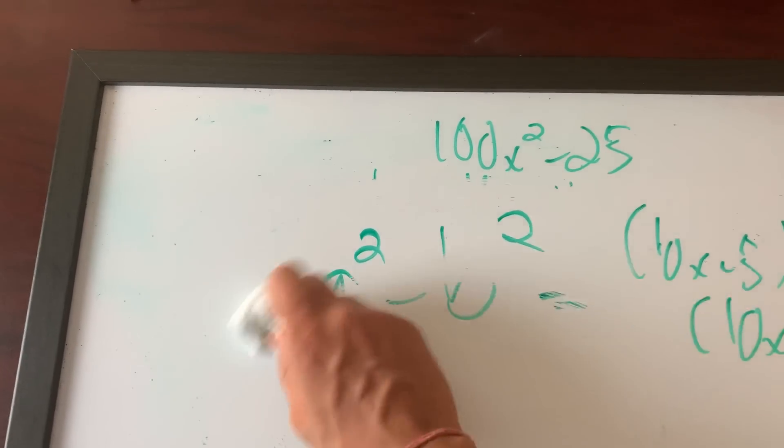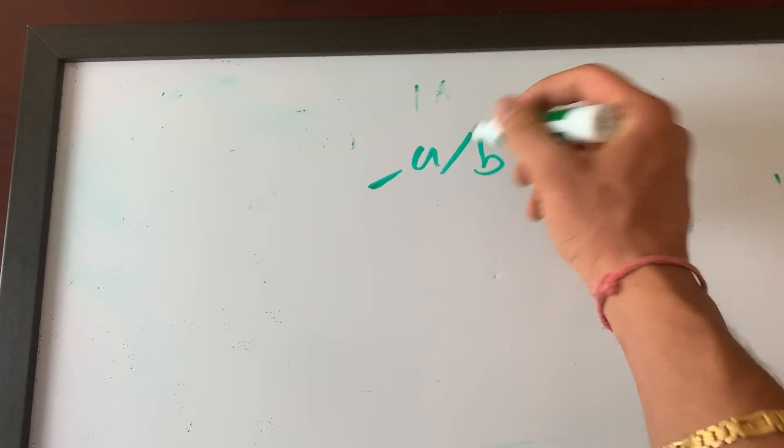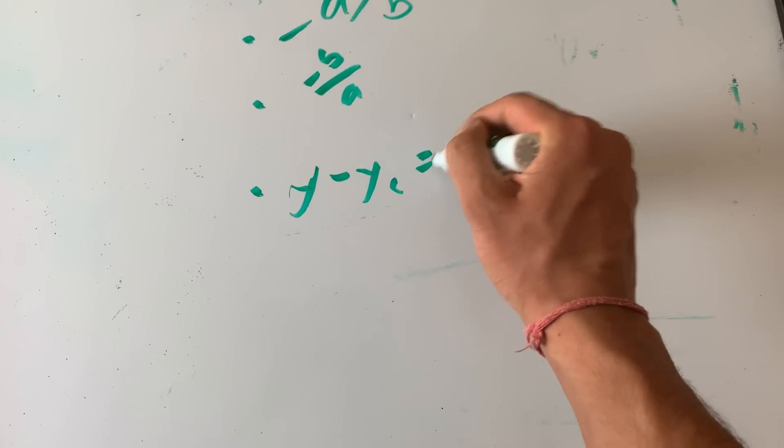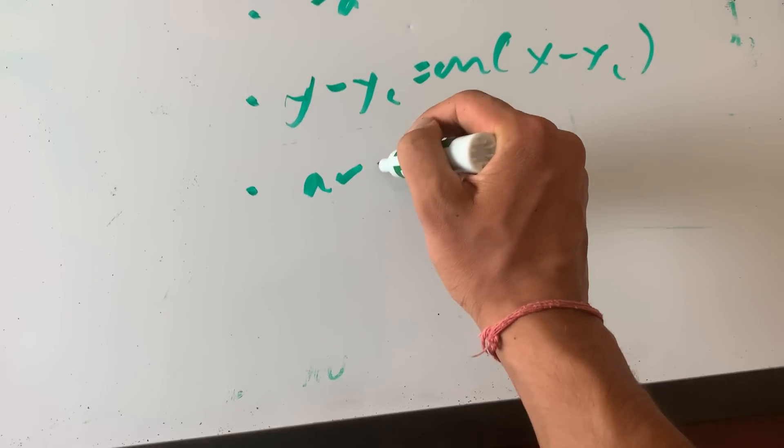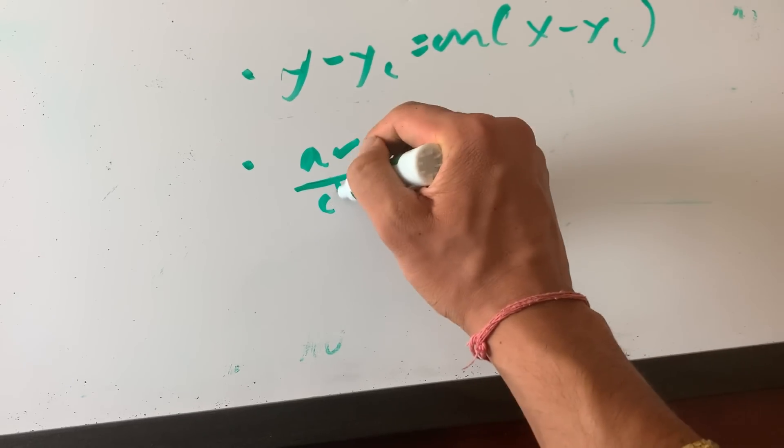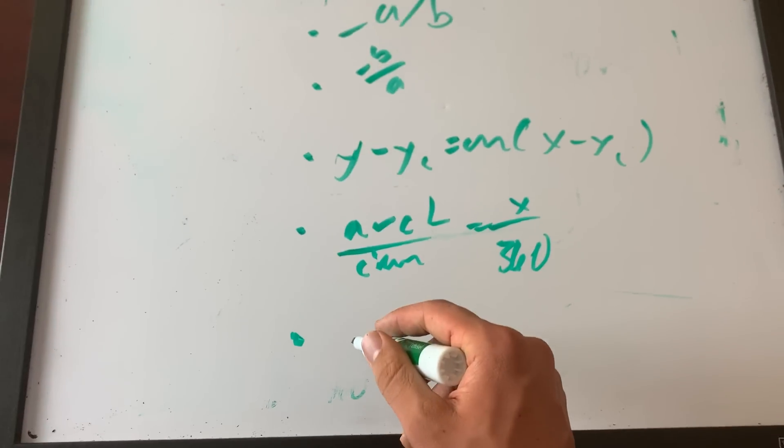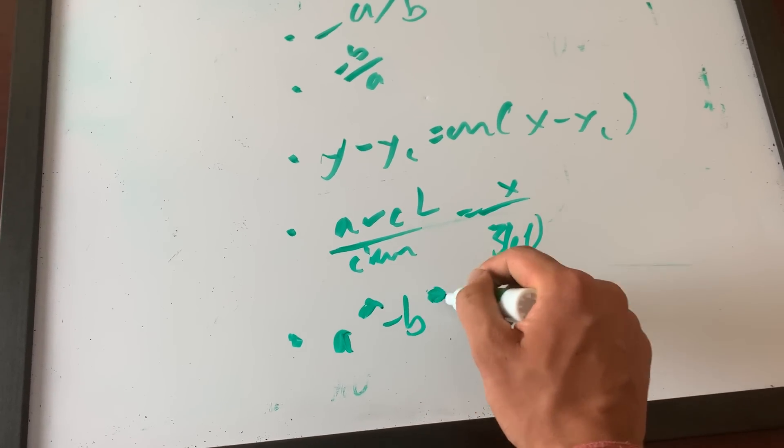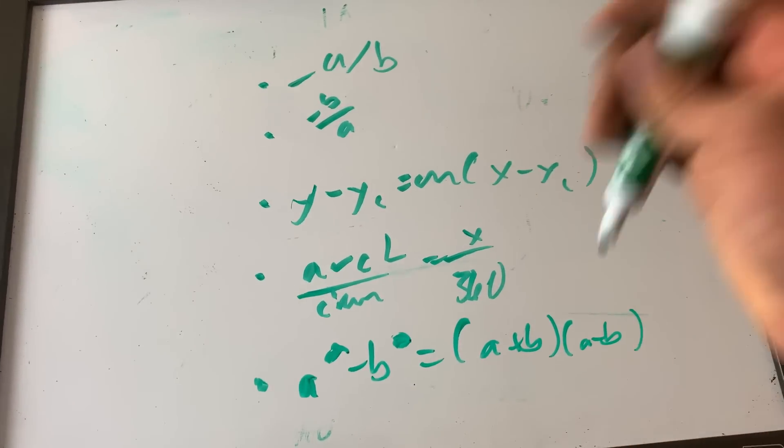So remember that. And these five things, I'm gonna hold this right now: negative a over b, one; negative b over a, two; point slope form, three; arc length over circumference equals x over 360, four; and the last one, a squared minus b squared equals a plus b times a minus b. These five things, remember this guys.